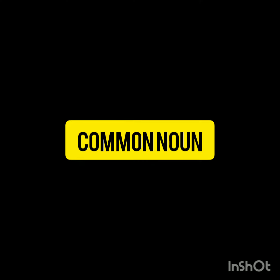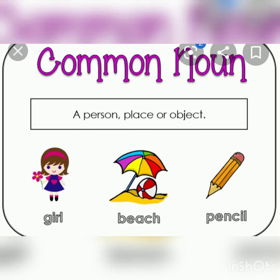Next is common noun. Common nouns are the words that represent common people, places, animals and things of the same class or kind. Here, girl — girl represents all types of girls. Beach, pencil — all these examples are of common noun. It means they represent common people, places, animals or things of the same class or of the same kind.